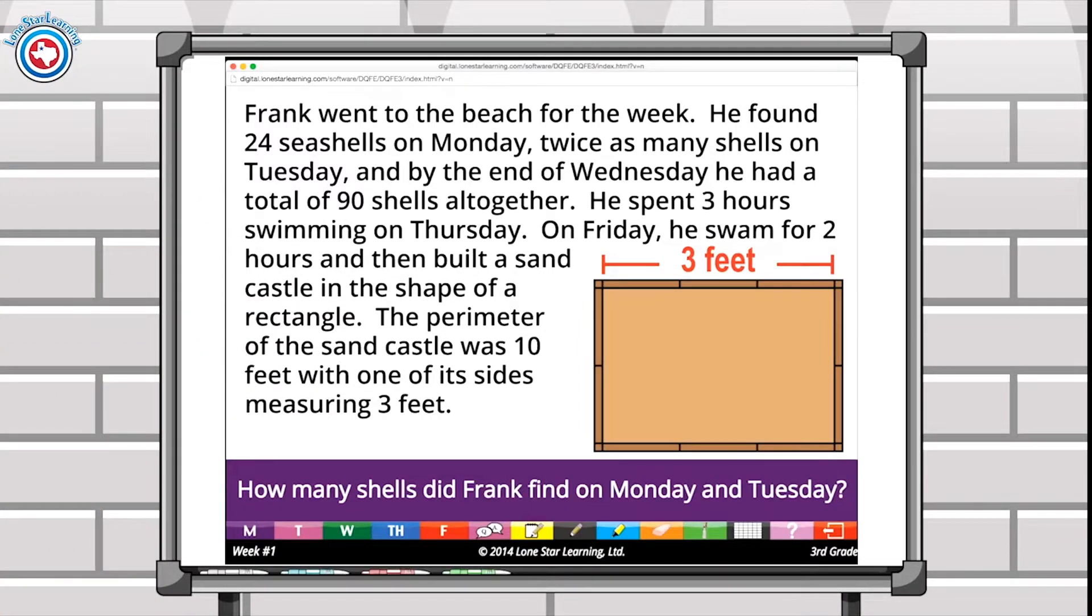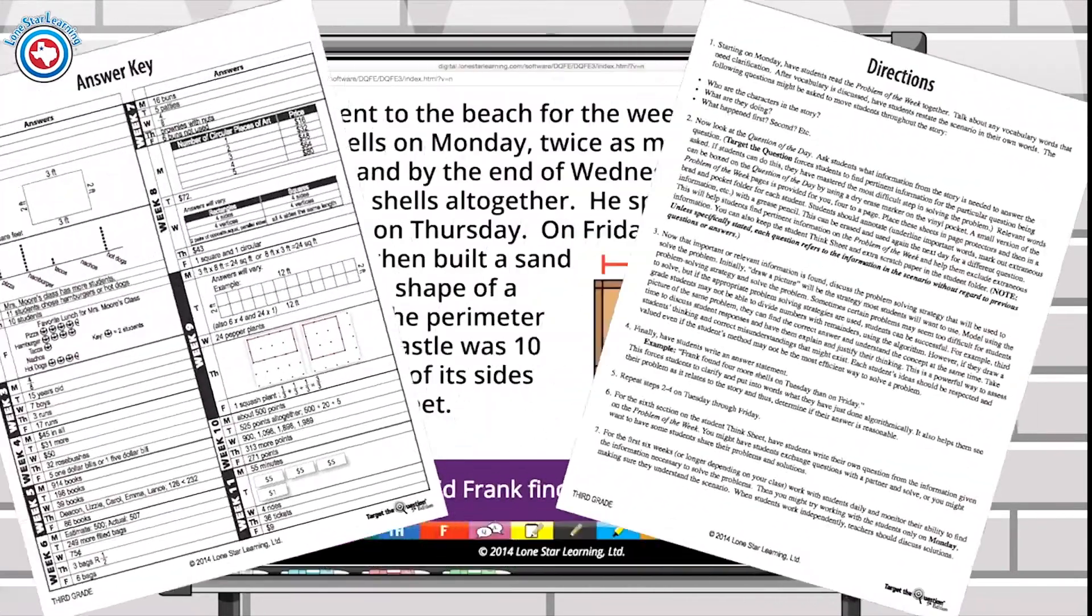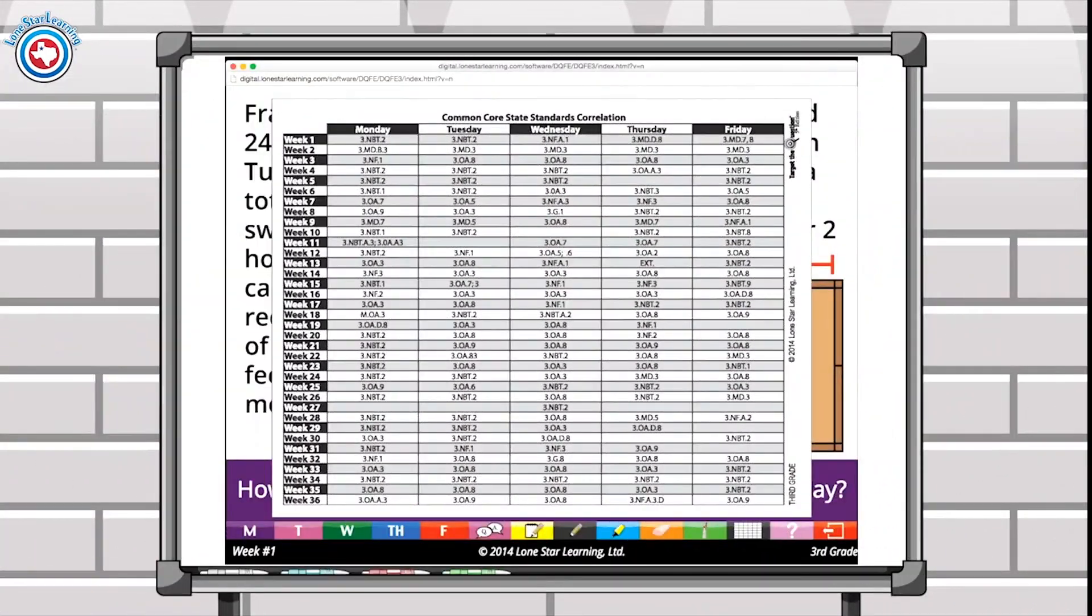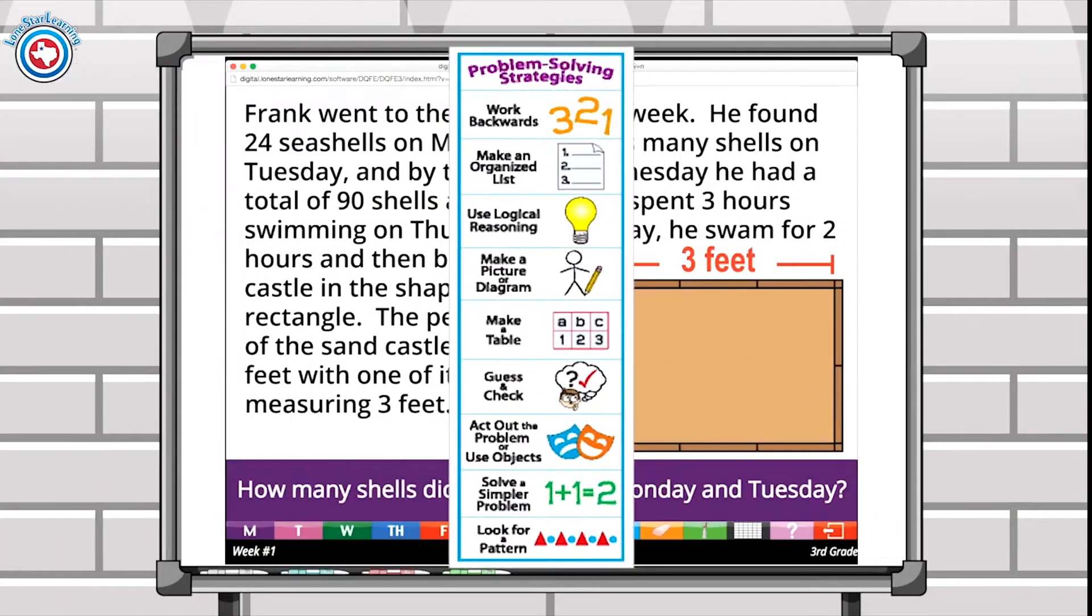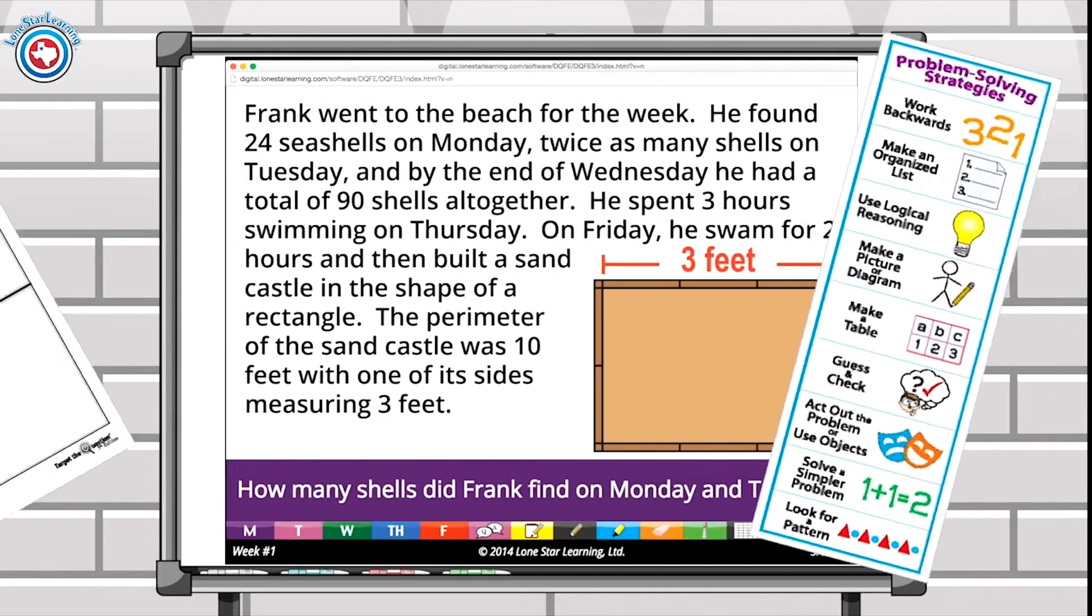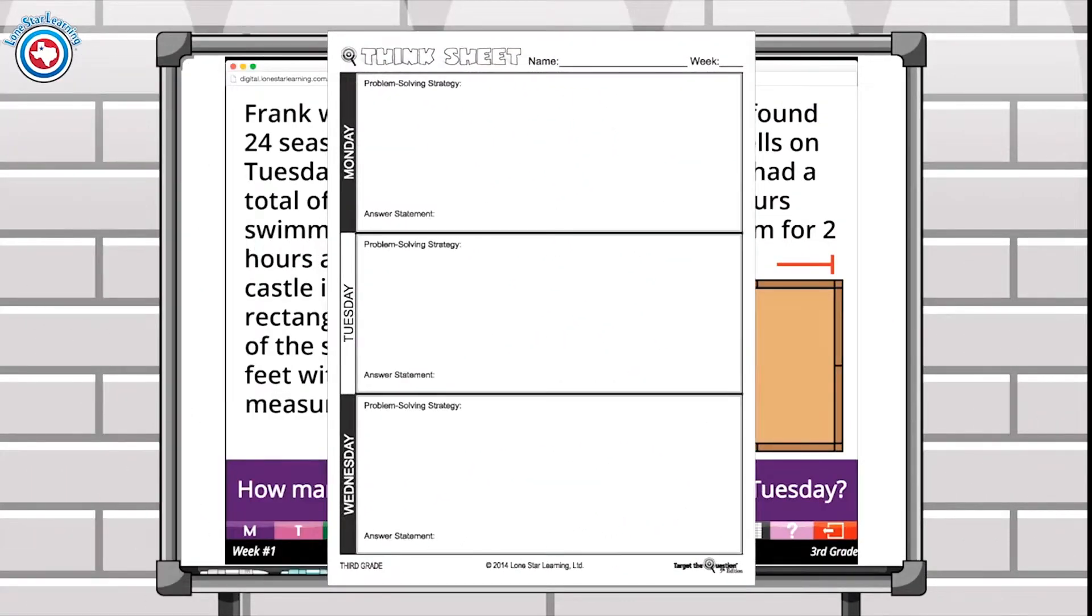Included in your copy of Target the Question are printables with directions for use, an answer key, correlations to the Common Core State Standards, correlations to the Texas Essential Knowledge and Skills, a problem-solving strategies poster, and student think sheets that can be reproduced for students to use.